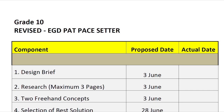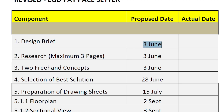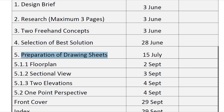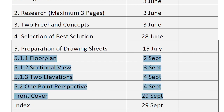Here is the revised EGD pace setter for Grade 10. We were originally supposed to meet in May. Your handing dates are: design brief on the 3rd of June, research on the 3rd of June, and two freehand concepts also on the 3rd of June. We'll meet again on the 28th of June to discuss selecting the best solution. You'll have holiday time to prepare your drawing papers, and further drawing tasks will be covered in August.